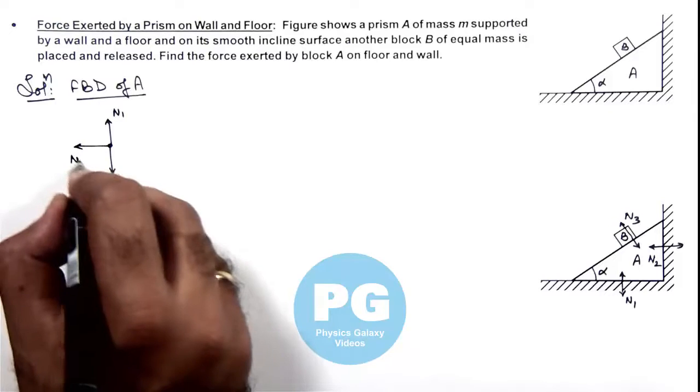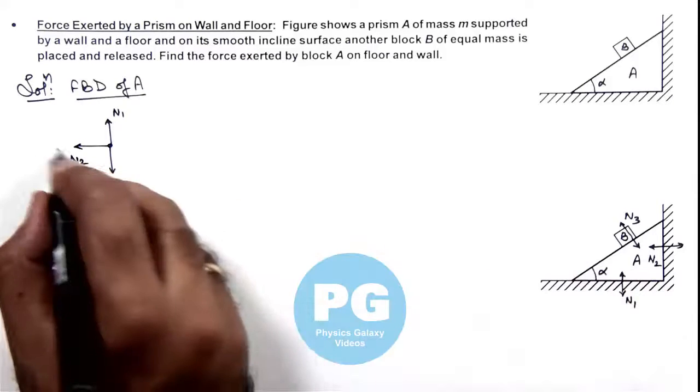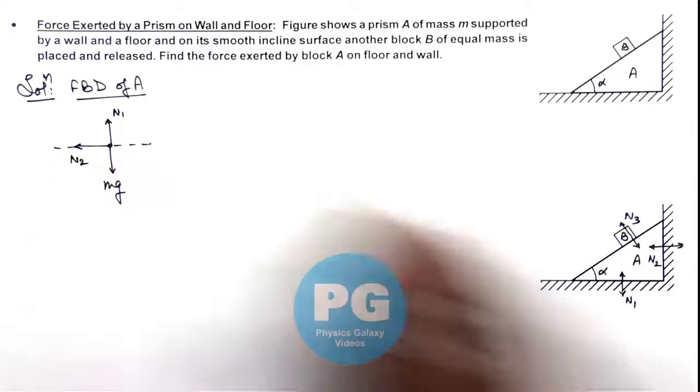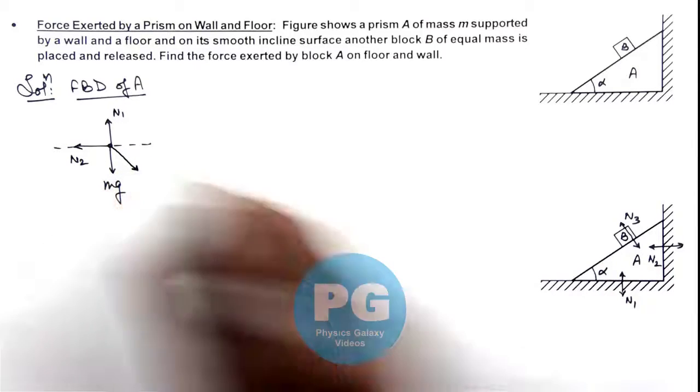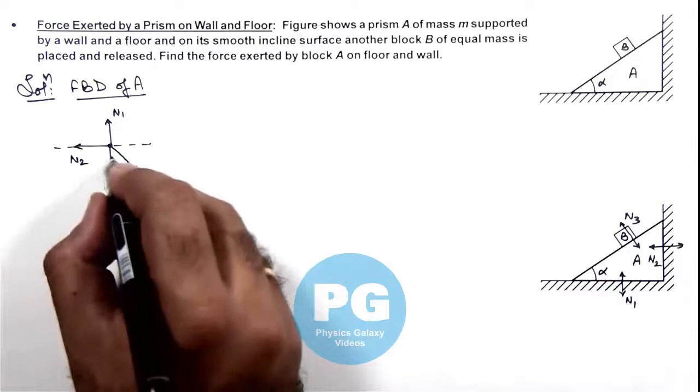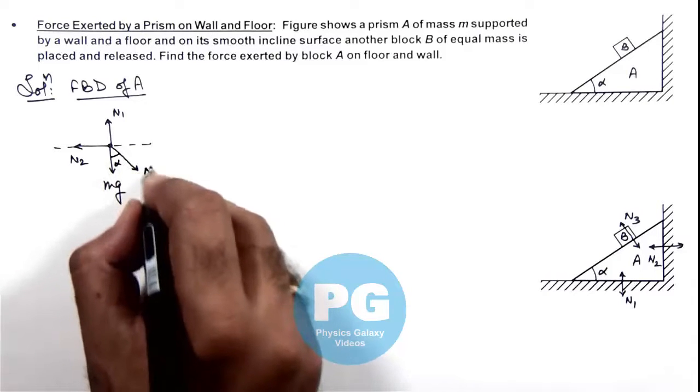A normal reaction N2 due to the wall toward left, and this normal reaction N3 is acting on the block normal to its inclined surface, so this angle here is alpha and this is N3.